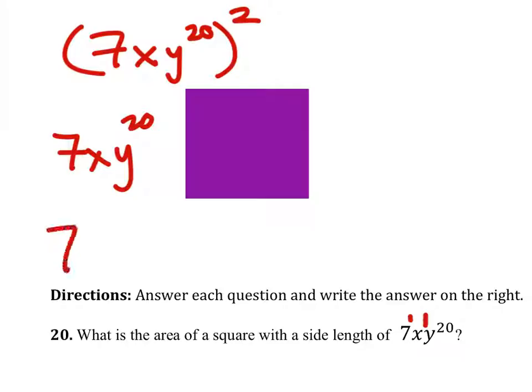Some of you may just think about this as the side length 7xy to the 20th times the width, which is the same, 7xy to the 20th, and then you could work from that. So you don't have to square it like the way we did it up there.